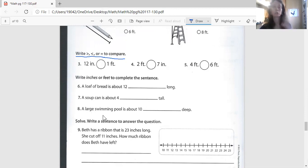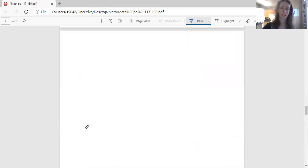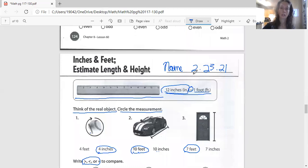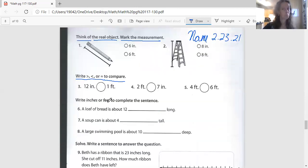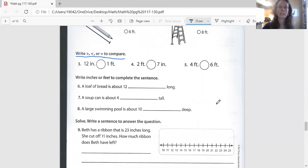We get our alligator mouth. Which one is bigger? It's the one we point the alligator mouth to. So I've got 12 inches, 12 of these little inches and one foot. Remember this. This will give you the answer to this one. You can do greater than, less than, or equal.